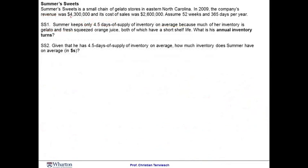Ready for the next question. This question is called Summer Sweets, and it's about a small gelato store that is having a revenue here of 4.3 million dollars, and cogs of 2.6 million dollars. The first question asks you to compute the inventory turns, and the second question asks you to compute the amount of inventory that is needed to run this business. Take some time for yourself, and then we'll tackle this together.